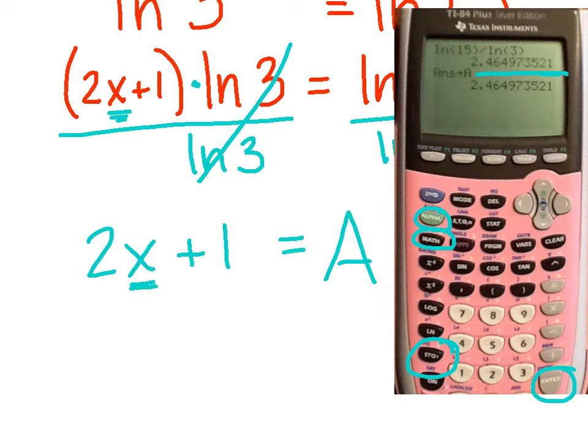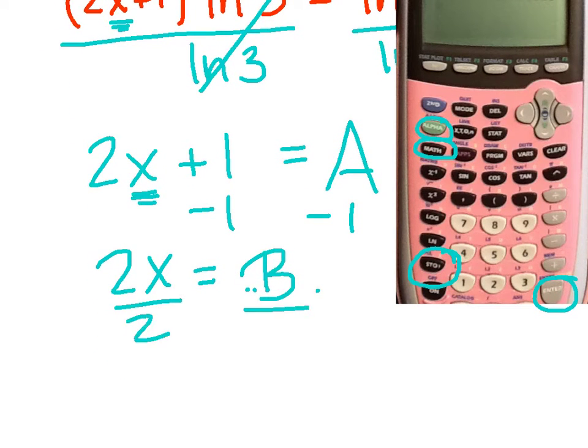So I'm going to actually set this equation equal to A. I do not want to write all those decimals down. At this point, my goal is to get x by itself. So it's just a very basic linear equation here. I'm going to subtract 1. So I've got 2x equals, and I am literally typing in A minus 1 on my calculator. And I'm going to store that into alpha B. And my last step is just to divide both sides by 2. I get final answers, 0.732.